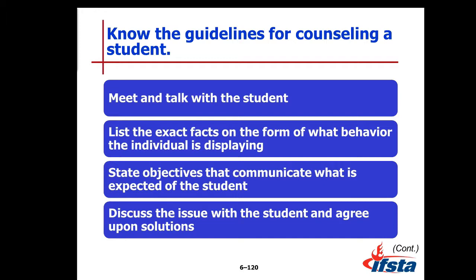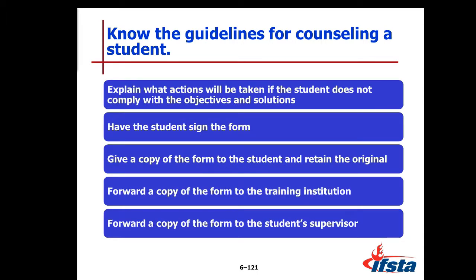Know the guidelines for counseling a student. Meet and talk with the student. List the exact facts on the form regarding what behavior the individual is displaying. We recommend that any time you coach or counsel a student, it's written down to make sure the student understands exactly what you're saying and to capture the student's point of view. State objectives that communicate what is expected of the student, going back to job performance requirements and specific parts of the NFPA standard. Discuss the issue with the student and agree upon solutions. Explain what actions will be taken if the student does not comply, and have the student sign the form.